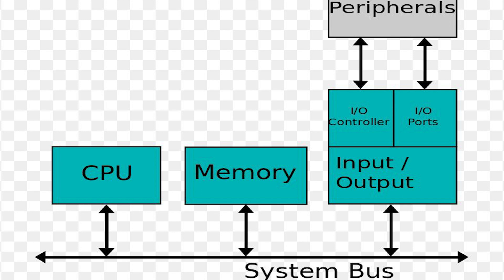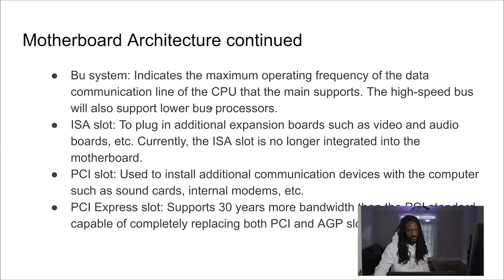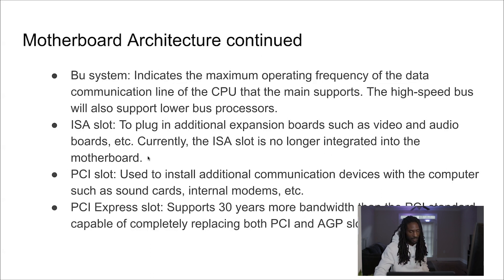The bus system indicates the maximum operating frequency of the data communication line and CPU that the main board supports. The high-speed bus will also support lower bus processes — this is just data transfer. The bus is basically like a highway where your data is transferred. Your processor uses the bus to transfer data to different parts of your system. The ISA slot is just a slot to plug in an additional expansion board, giving you extra capabilities for video and audio devices. Currently the ISA slot is deprecated and obsolete in new PCs, but in old PCs it was a big thing.